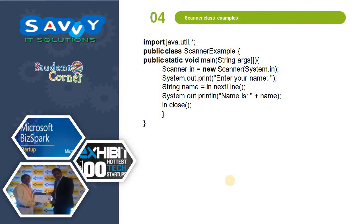Taking a small example: we need to read a string. First we are importing the Scanner class. Next we create the object. Then nextLine reads and scans the string, which is assigned to the variable name. We print the value of name. Finally we need to close the scanner using the close method.